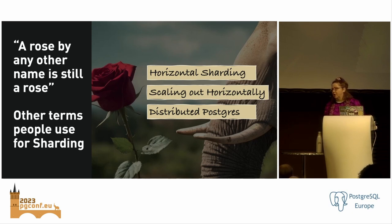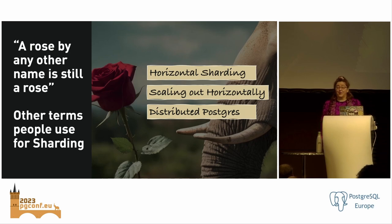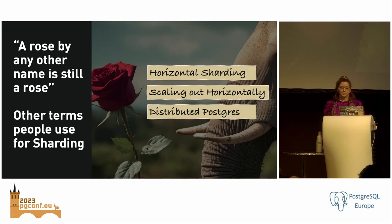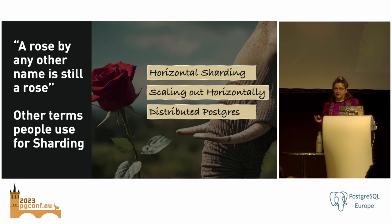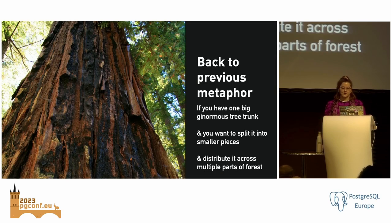You might hear sharding called other things. As I paraphrase Shakespeare: a rose by any other name is still a rose. You might hear people talk about horizontal scaling, horizontal sharding, scaling out horizontally, or distributed Postgres — there are a bunch of different names, but they all mean the same thing: you're taking big tables, splitting them into smaller chunks — shards — and spreading them across different nodes.